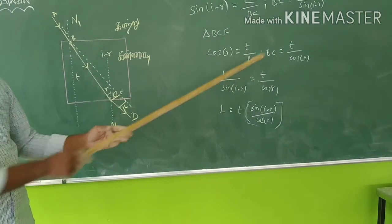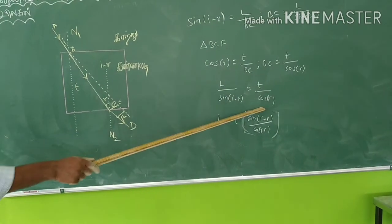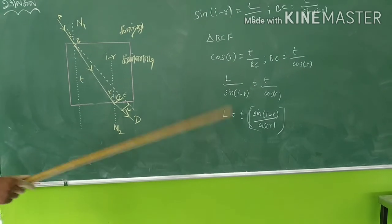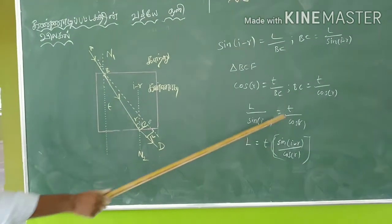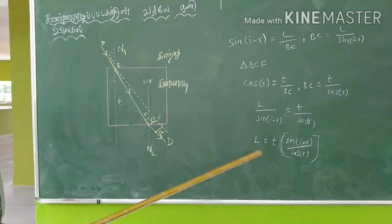There are two BC. Here is BC and here is BC. L by sin i minus r and t by cos r. Let's try this shift. T into sin i minus r by cos r.